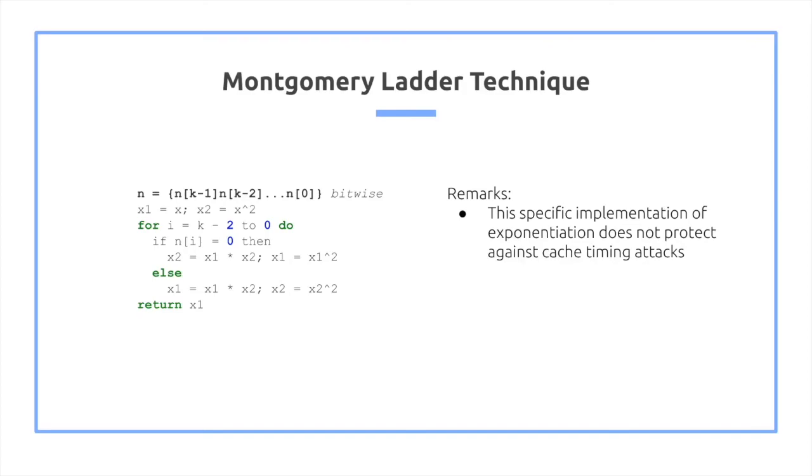By making it one factor larger than x1, we can leverage it by multiplying x1 and x2 when the bit is 1 by the x2, because x2 is one factor larger, and when it's even we multiply both x1 and x2 by x1. That is the critical observation that makes the Montgomery ladder technique work.